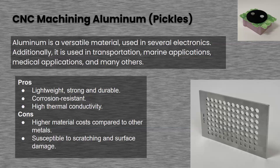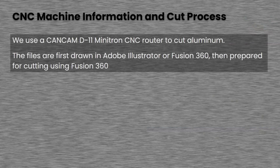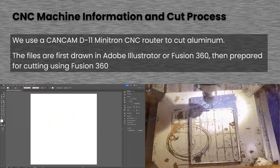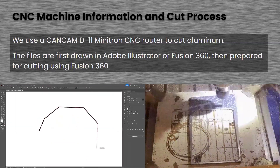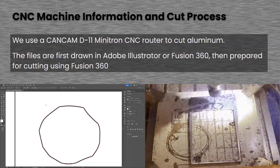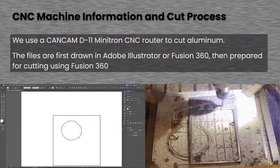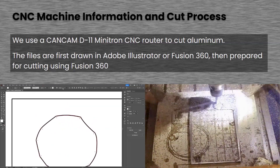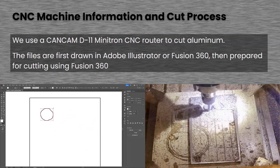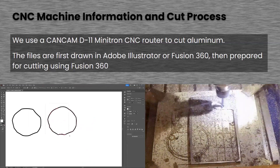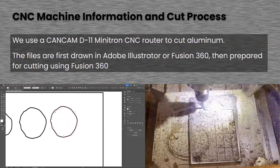Aluminum is on the cheaper end of metals, though marginally more expensive than things like brass or other cheap alloys. Even though it's quite strong, it scratches and damages quite easily. We use a CanCam D11 Minitron CNC for this. You can see it on the right — at one point it does lose the leftmost piece and I don't know where that went. I designed these 'pickles' in Illustrator, then prepared them to be cut using Fusion 360, as you can see on the left with the CNC cutting them out on the right.